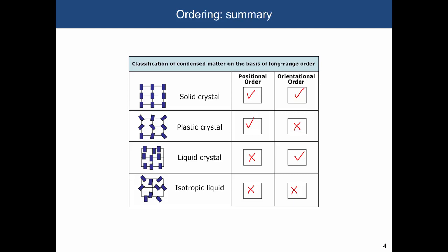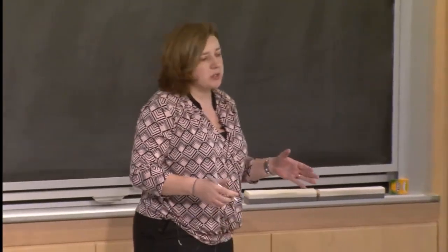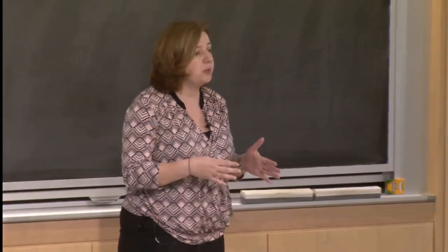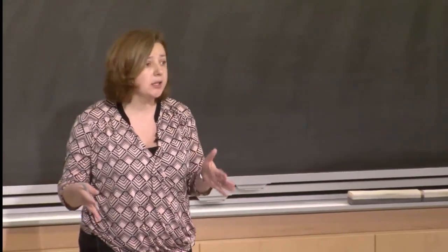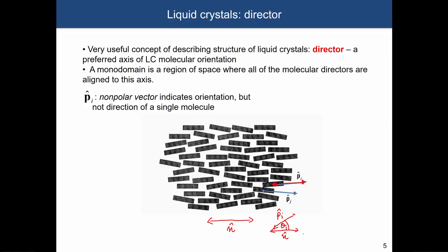Liquid crystalline materials, which have long-range orientational order but lack translational order, are technologically important. What is really important about these materials is that the molecules are usually highly anisotropic — their shape is highly anisotropic. We specifically mentioned that they can be either calamitic or discotic, depending on the shape of the molecules. Calamitic molecules are rod-like, very long molecules, and discotic ones are disc-like.